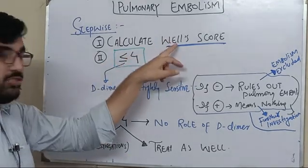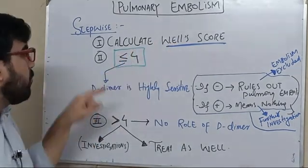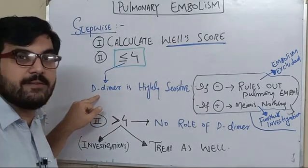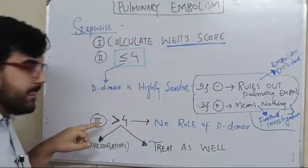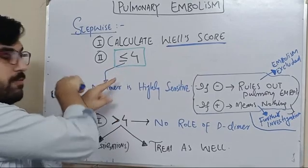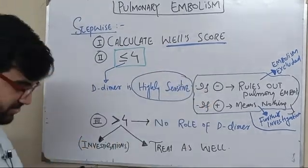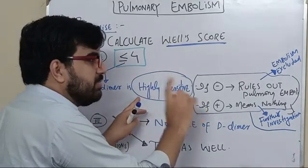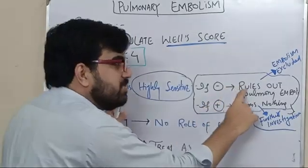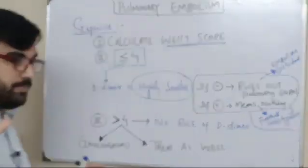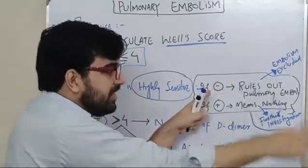If the Wells score is equal to or less than four, the D-dimer has high sensitivity. If the Wells score is more than four, there is no role of D-dimer. If it is equal to or less than four, D-dimer has a role but only high sensitivity. High sensitivity means if it is negative — if the D-dimer test is normal — it means pulmonary embolism is ruled out. If the Wells score is four or less and D-dimer is negative, it rules out pulmonary embolism and no further study is needed.